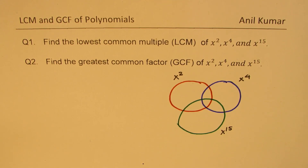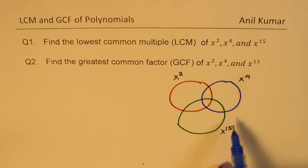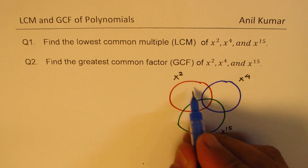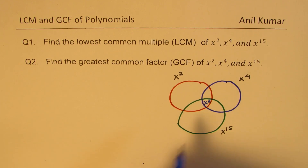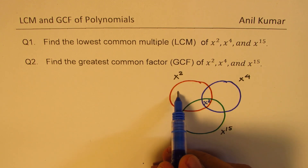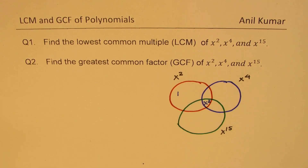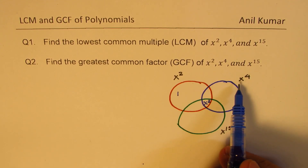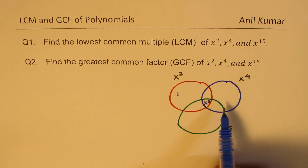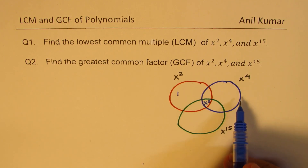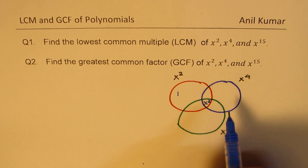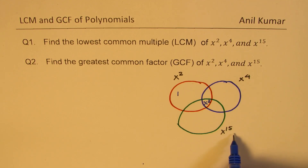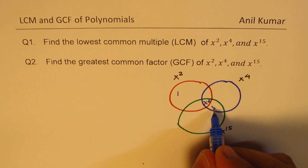As you can see, x squared is common to all. So this factor, x squared, can be written in the center. For x squared, the factors are just 1 and x squared. As far as x to the power of 4 is concerned, in this blue circle, we already have x squared. So we could now have x squared common with x to the power of 15, and I could write x squared here.